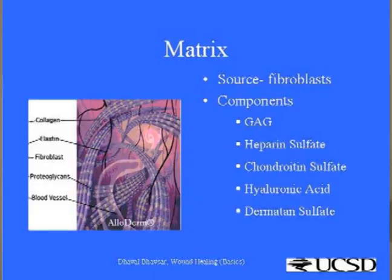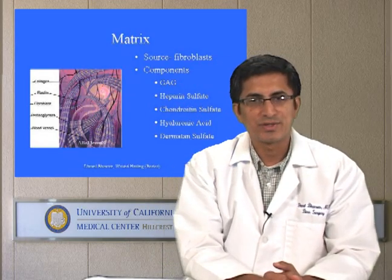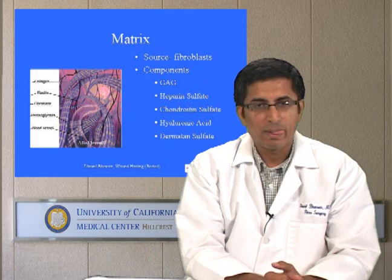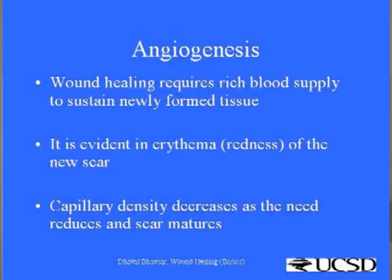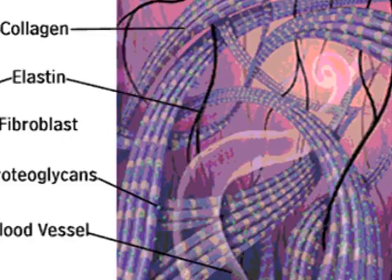Matrix is the substance that fills the gap between the cells and capillaries. It is the most important end result of the proliferation phase. Most matrix components come from fibroblasts and include glycosaminoglycans, heparin sulfate, chondroitin sulfate, hyaluronic acid, and dermatan sulfate. The photograph on the left shows a schematic diagram of matrix components as they are in human dermis.